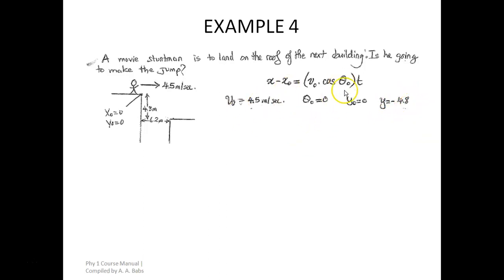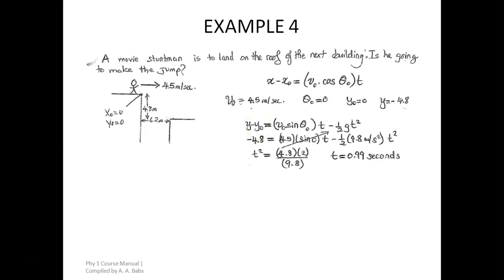So we have θ₀ as 0 and v₀ as 4.5 meters per second. What we are looking for is x minus x₀. The only unknown delaying us is t. To find t, we use one of the vertical motion equations: y minus y₀ equals v₀ sin(θ₀) multiplied by t, minus ½ g t².